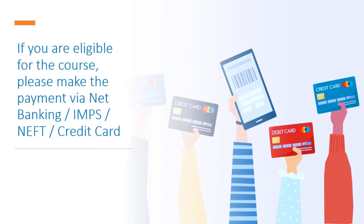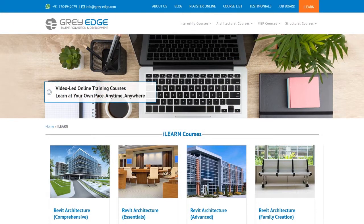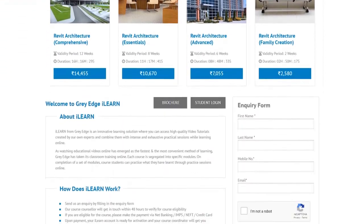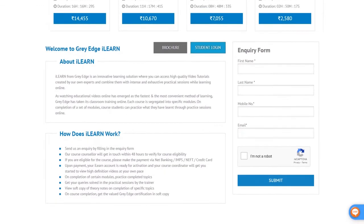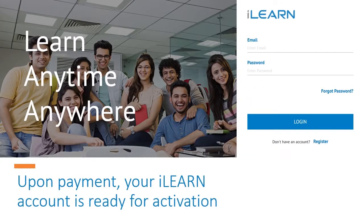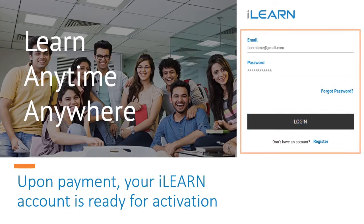If you are eligible for the course, please make the online payment. Browse the ILEARN web page, scroll down and click on student login. Upon payment, your ILEARN account is ready for activation.